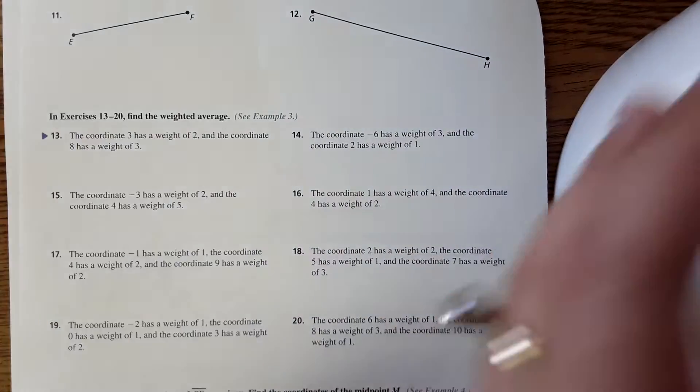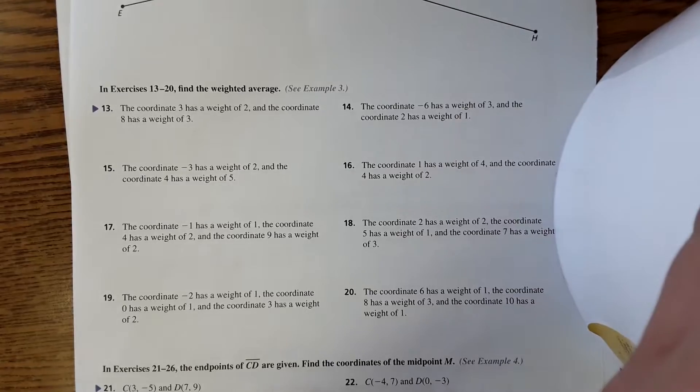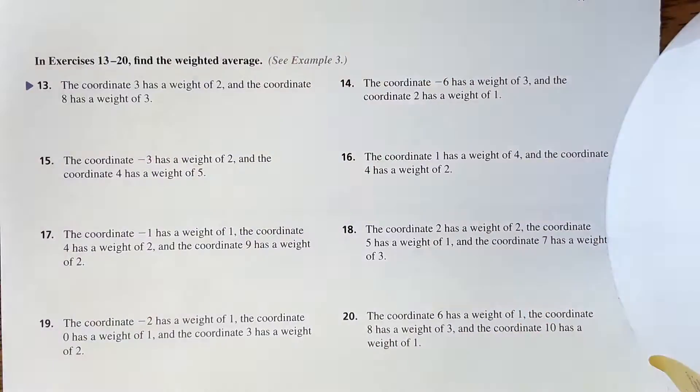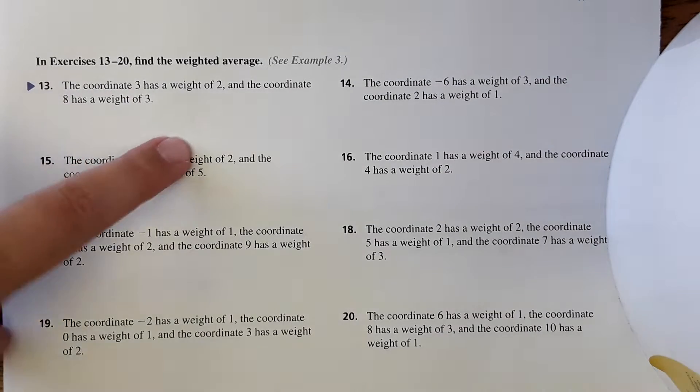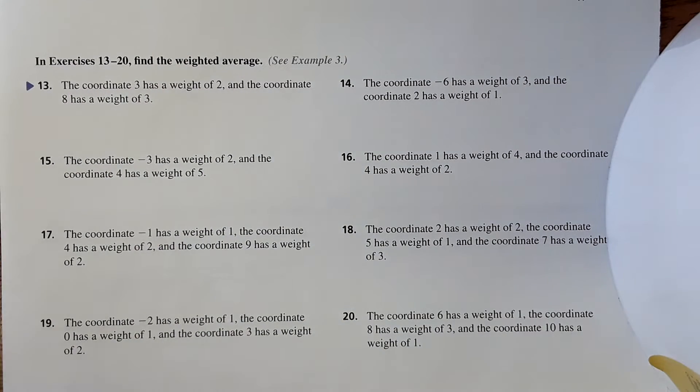Okay, so here's what we haven't seen. Number 13, it says the coordinate 3 has a weight of 2 and the coordinate 8 has a weight of 3 and it wants to know the weighted average. Now normally I'd say if you haven't seen something before, see what you can figure out. This is not one of those problems that I think you could figure out.